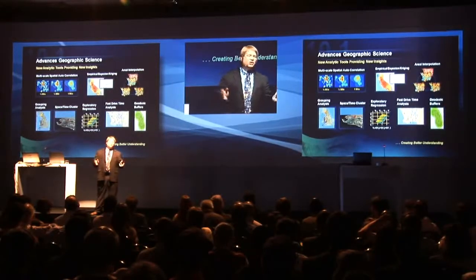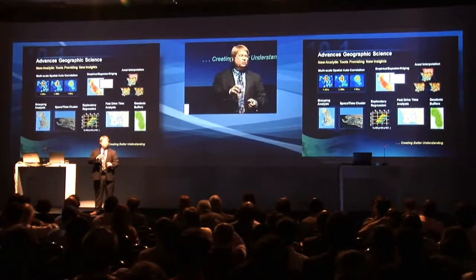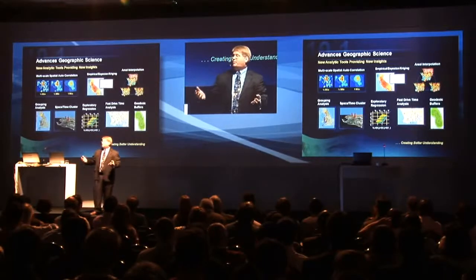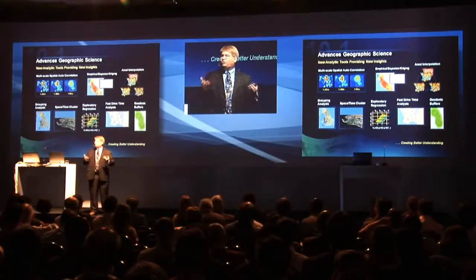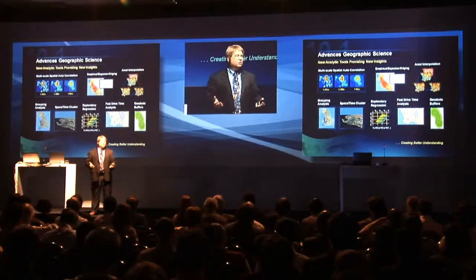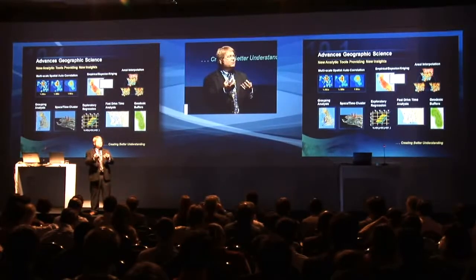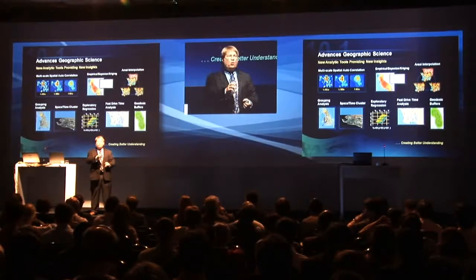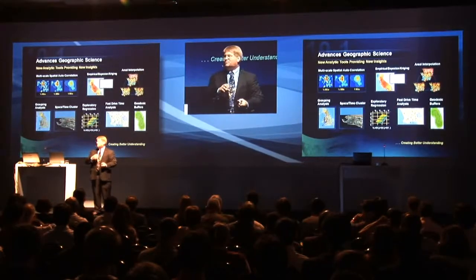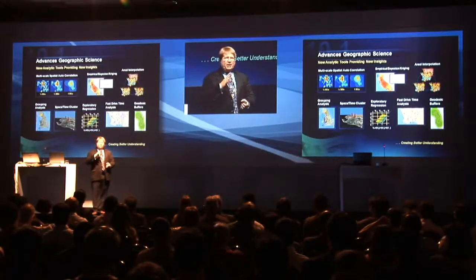One of those is multi-scale spatial autocorrelation. What that really means is it helps you determine at what scale you should do your analysis. Right now, when you do an analysis — say a hotspot analysis or a density analysis — what scale do you do it at? This tool will go through the system and calculate how related the data is at different scales, giving you a better understanding of which scale you should actually do your analysis at. Some of us are probably going to have to redo analysis we've done in the past.